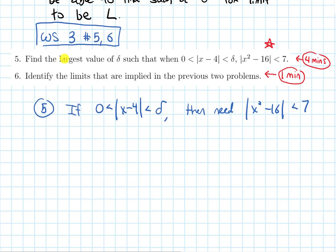So in question five, it wants you to find the largest value of delta, such that when zero is less than the absolute value of x minus four is less than delta, then the absolute value of x squared minus 16 is less than seven. So it's really similar to a problem that we did in lecture, just with different numbers. So I want to first give you four minutes to try question five, and then after that, try to do six, which is to identify the limit that is implied in the previous problem. I know it says previous two problems. That's referring to question number four on the worksheet, which I don't want you to try right now. Pause it in four, three, two, one, pause the video, try question five for four minutes, and then after that, try question six for a minute.